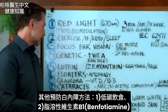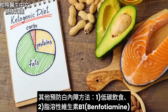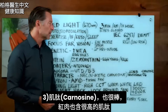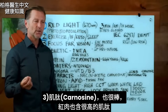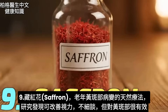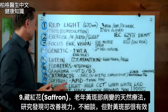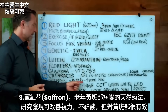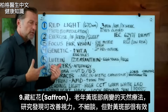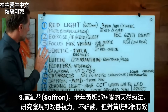There are other things that can prevent cataracts: going on a low-carb diet, benfotiamine, and carnosine — which you can get from red meat, which is loaded with carnosine. Saffron is a fantastic remedy for age-related macular degeneration. It has been found to improve vision and works really well for the macula.